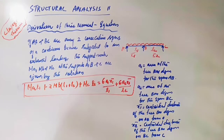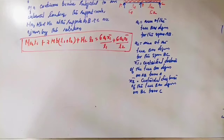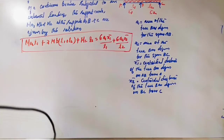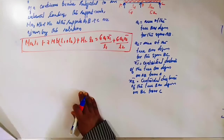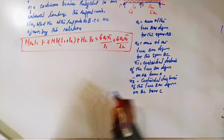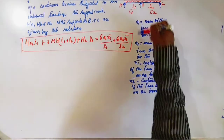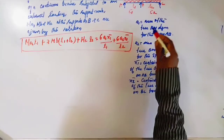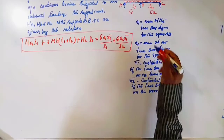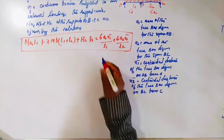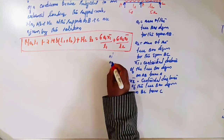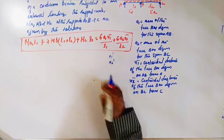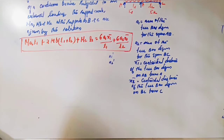What is the free bending moment diagram? What is the fixed bending moment diagram? A1 and A2 are the areas of the free bending moment diagram, and A1' and A2' are the areas of the fixed bending moment diagram for spans AB and BC.